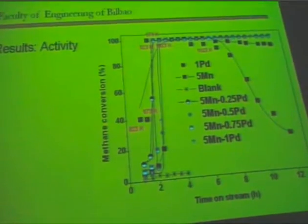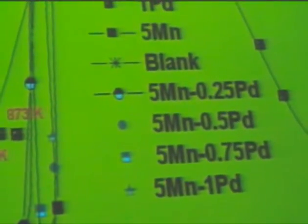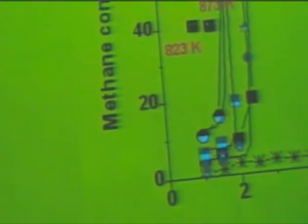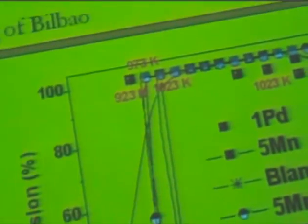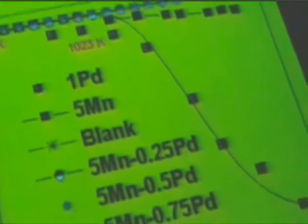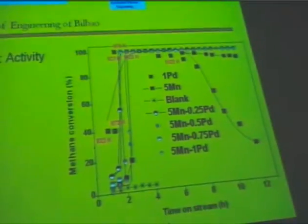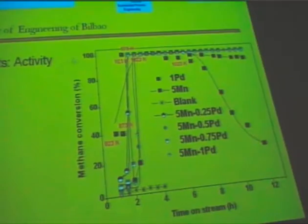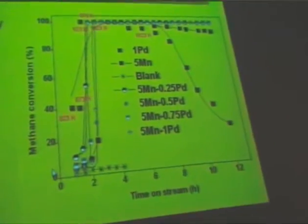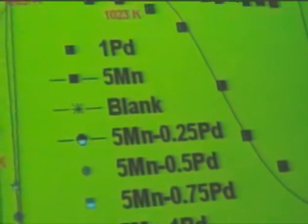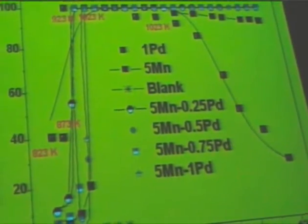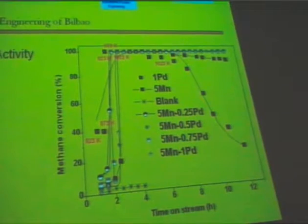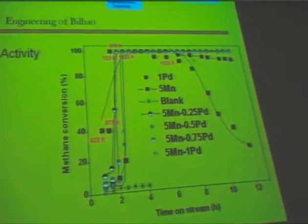In this other figure, it is analyzed the effect of different catalysts and the activity of all catalysts. The effect of the reactor is completely null. The most active catalyst is palladium, but it has the problem of deactivation. In the case of the manganese catalyst, it is less active than the palladium catalyst and it has deactivation.